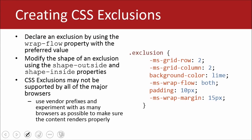You can declare an exclusion by using the wrap-flow property and its preferred value — we said 'both', which makes sure there's wrap around each side of the element. You can modify the shape using the shape-outside and shape-inside properties. It's important to note that an exclusion may not be supported by all browsers, so I'm still using vendor prefixes, including the Microsoft vendor prefix.